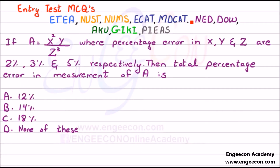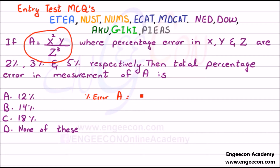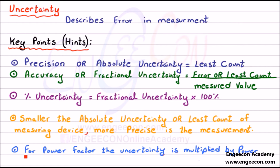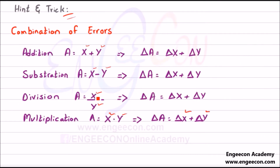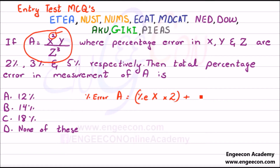Here we have another entry test MCQ. If A = X²YZ³ and the percentage errors in X, Y, Z are 2%, 3%, and 5% respectively, find the total percentage error in A. The percentage error in A equals the percentage error in X multiplied by its power 2, plus the percentage error in Y, plus the percentage error in Z multiplied by its power. For power factors, the uncertainty is multiplied by the power, and errors are always added whether quantities are multiplied or divided.